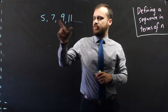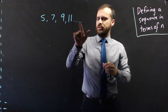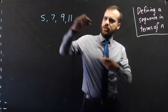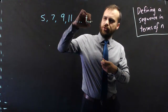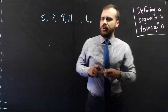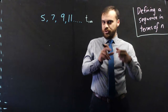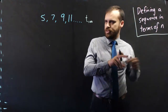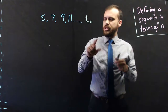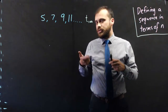5, 7, 9, 11, and so on — my question is: what would term 100 be? Well, using the recurrence relations we've used previously, I would need to know what term 99 was.